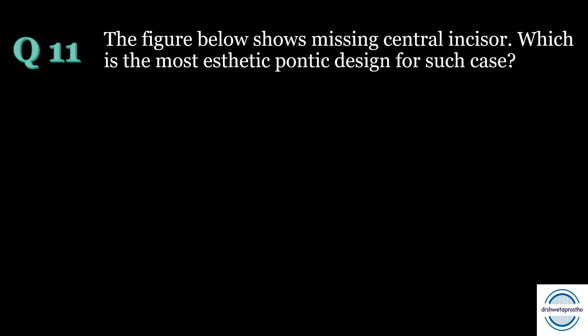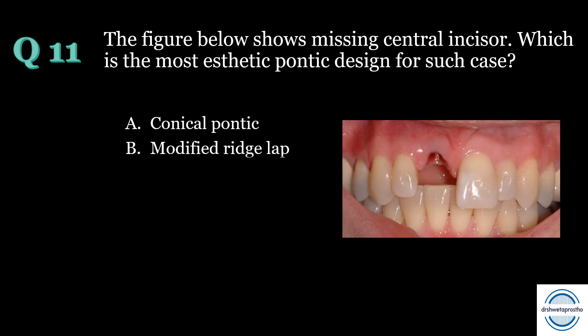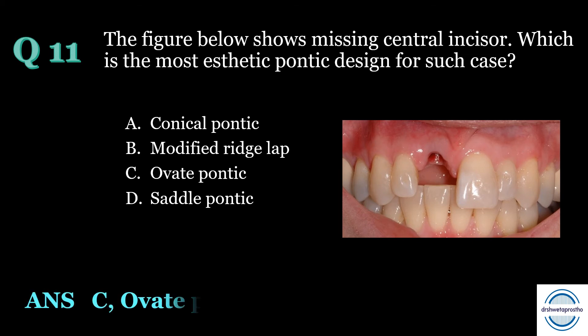Question number eleven: The figure shows a missing central incisor — which is the most aesthetic pontic design for such a case? A) conical pontic, B) modified ridge lap, C) ovate pontic, or D) saddle pontic? The answer is C — ovate pontic. Normally we would go for the modified ridge lap for a central incisor, but since the question asks for the most aesthetic pontic, we choose the ovate pontic because its emergence from the ridge appears identical to that of natural teeth.